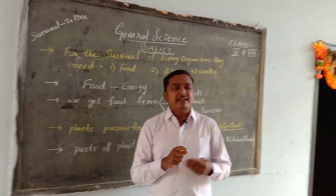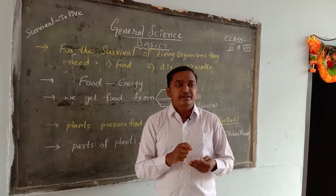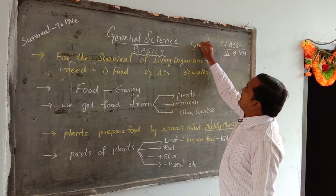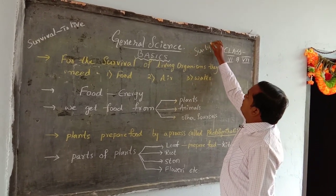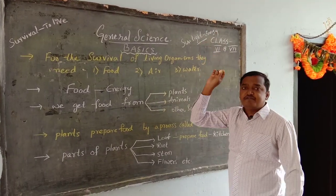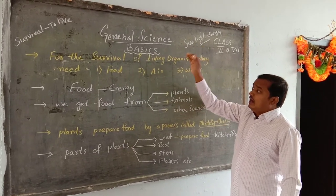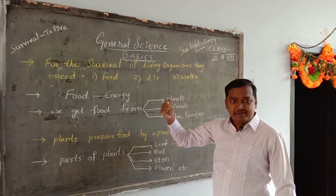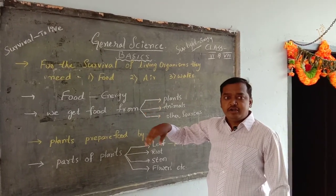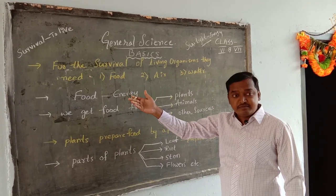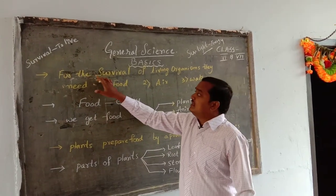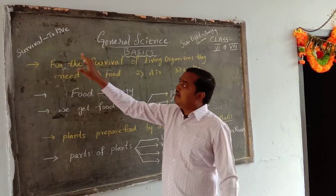For most living organisms like plants, animals, human beings — they need some sort of energy. They require energy to do work. Generally, first energy we get is natural energy from sunlight. But other living organisms need to prepare their food or depend on other living organisms for their energy and food.